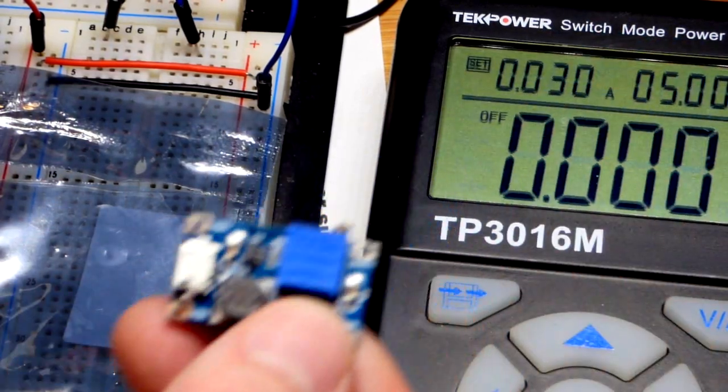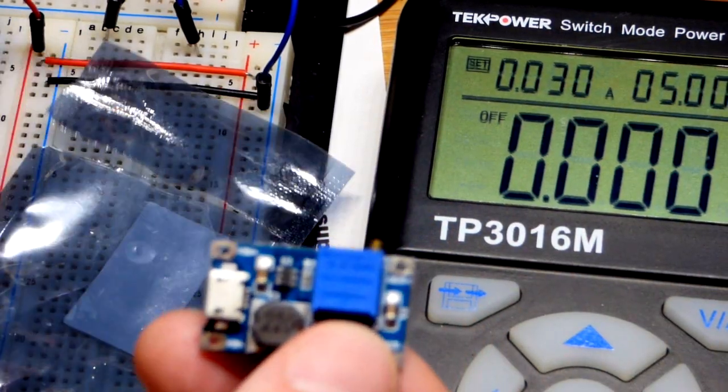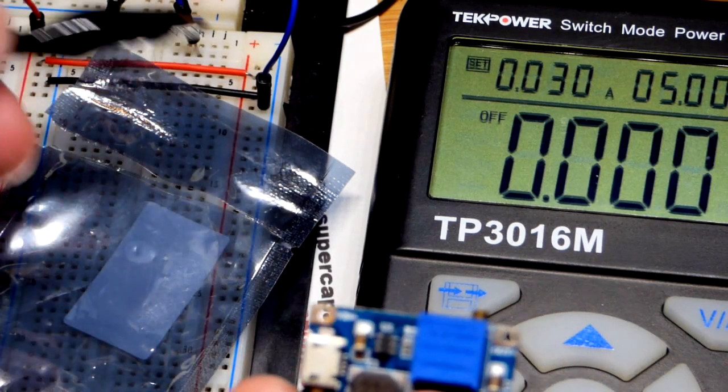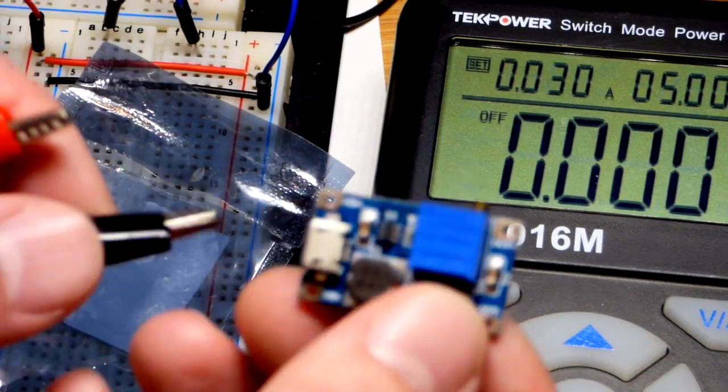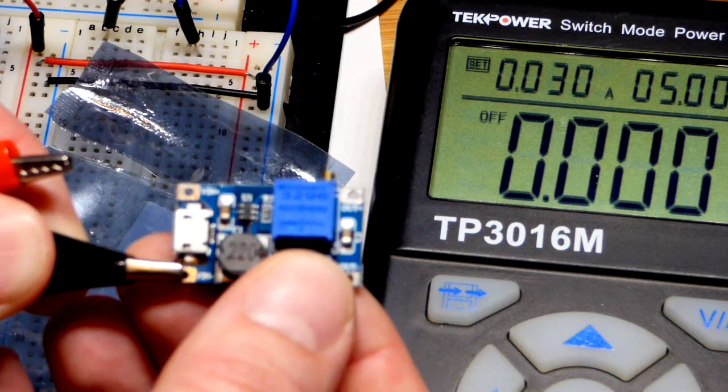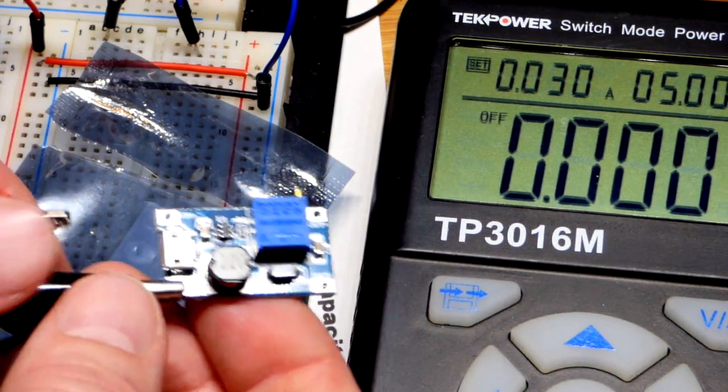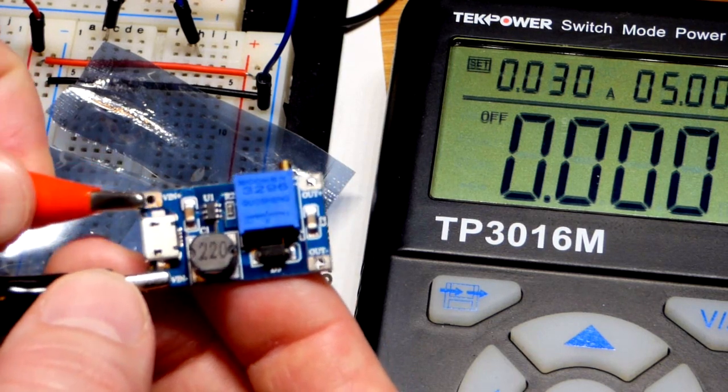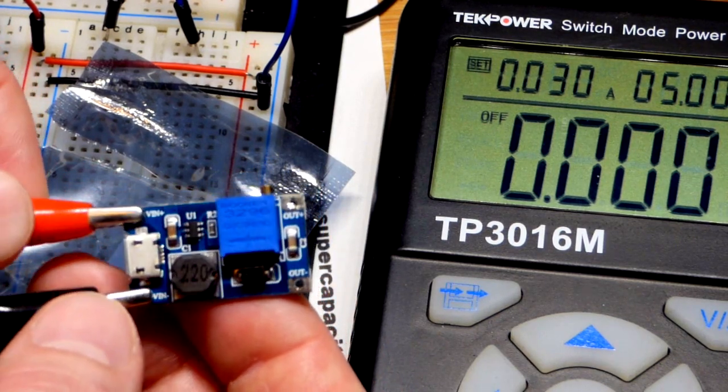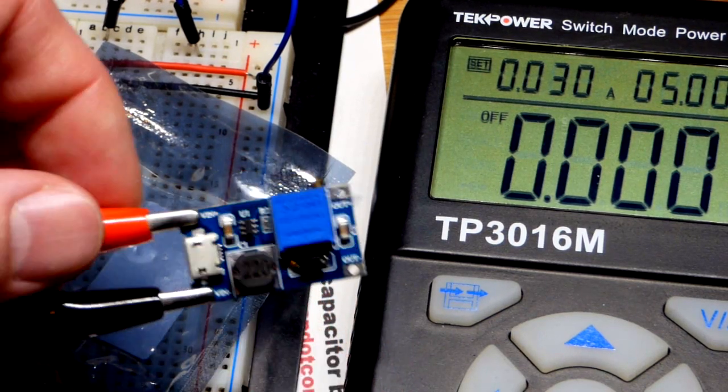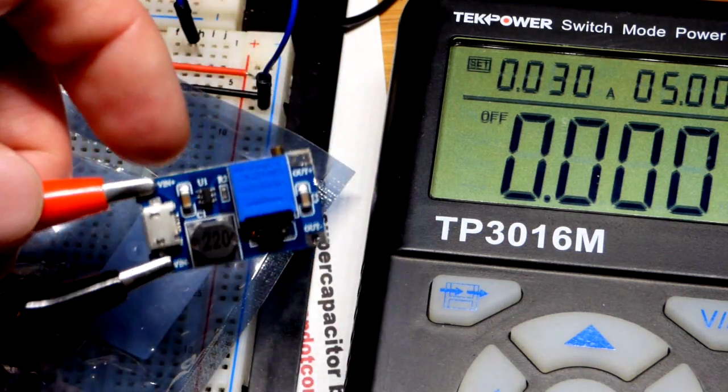It's really straightforward - we take the power supply and it has alligator clips. I usually clip them to these jumpers which power the board. This one says negative and that one says V in positive. That's it.